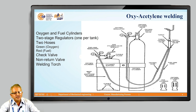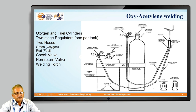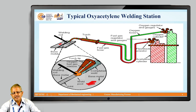Oxy-acetylene welding is very common. In the setup, oxygen and fuel cylinders are shown — fuel being acetylene. A two-stage regulator is used for high-pressure welding where pressure is regulated in two stages; single-stage regulators are also available. Two separate hoses are used — one for oxygen and one for acetylene. The oxygen hose is green in color and the fuel pipe is red in color. Check valves and non-return valves are also part of this standard setup.